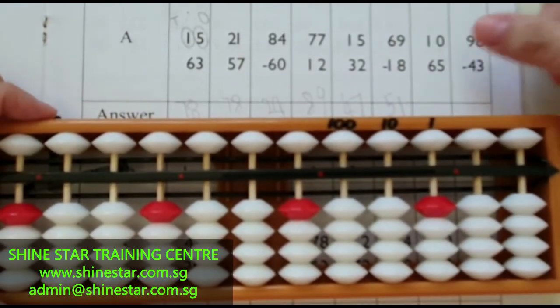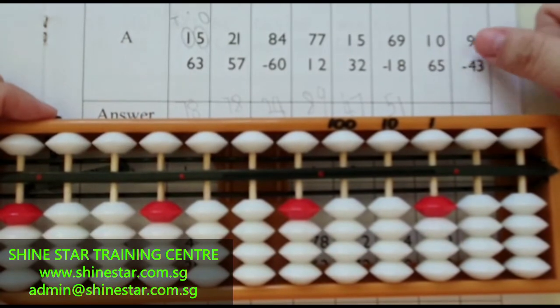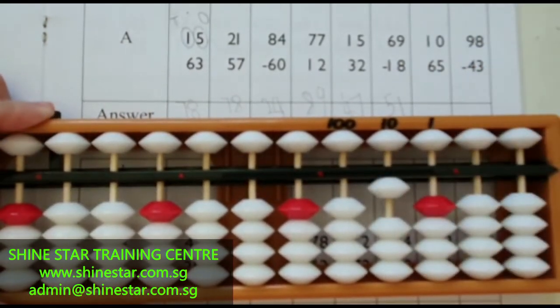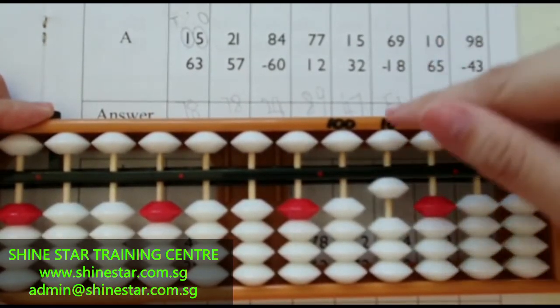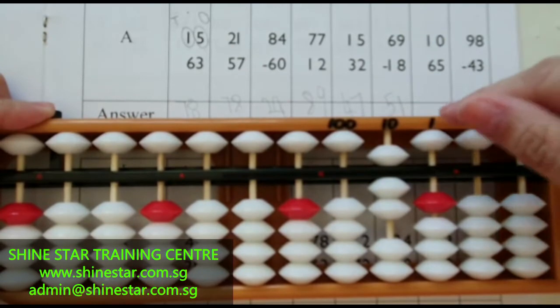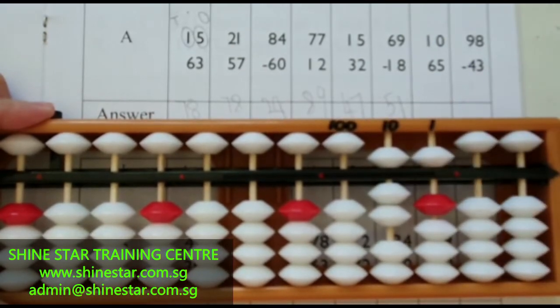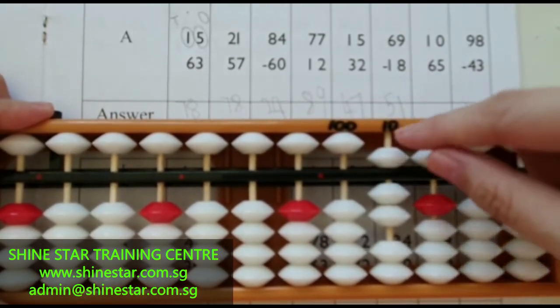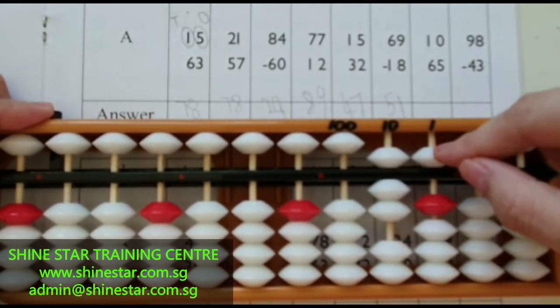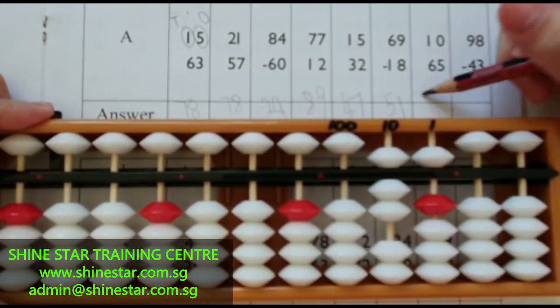The next question: ten plus sixty-five. The answer is fifty, sixty, seventy. Seventy-five.